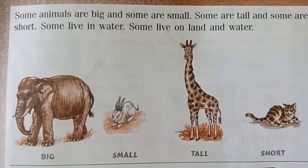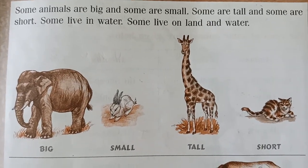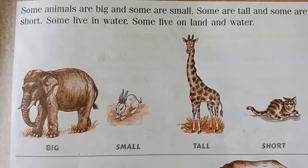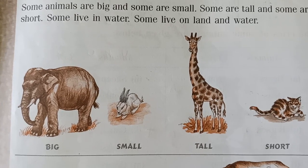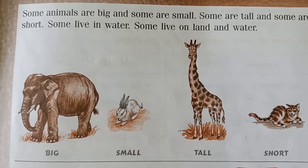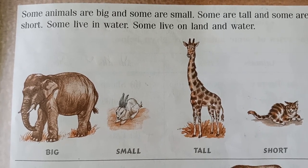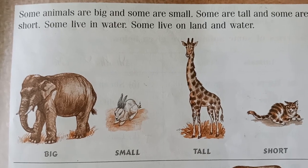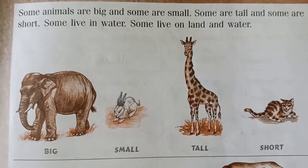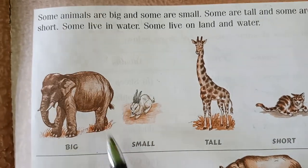Some animals are big and some are small; some are tall and some are short. Some live in water, some live on land, and some live on both land and water. Animals which live in water include fish, and animals which live on both land and water include frog.